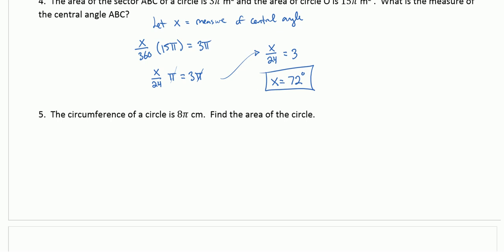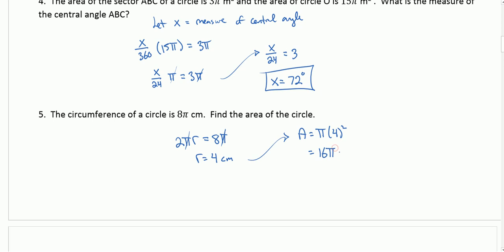Number 5, the circumference of a circle is 8 pi. So we know that 2 pi r is 8 pi. If I divide by pi and divide by 2, I get the radius is 4 centimeters. Now I want to find the area. The area is pi times r squared, which is 16 pi centimeters squared.